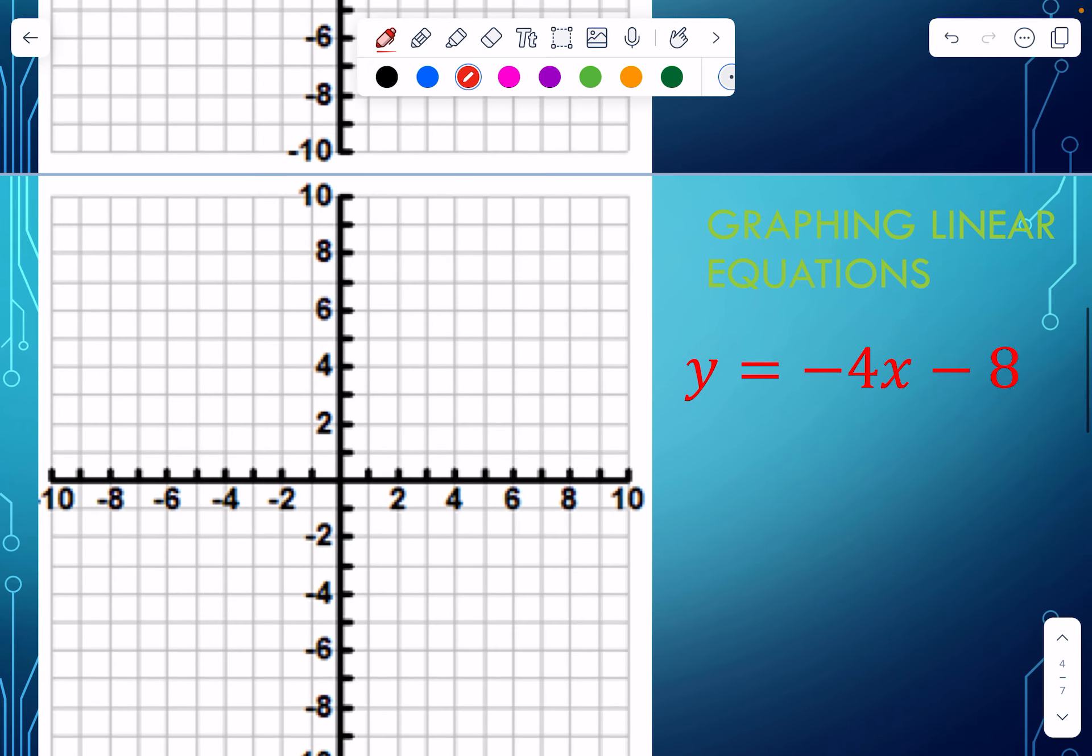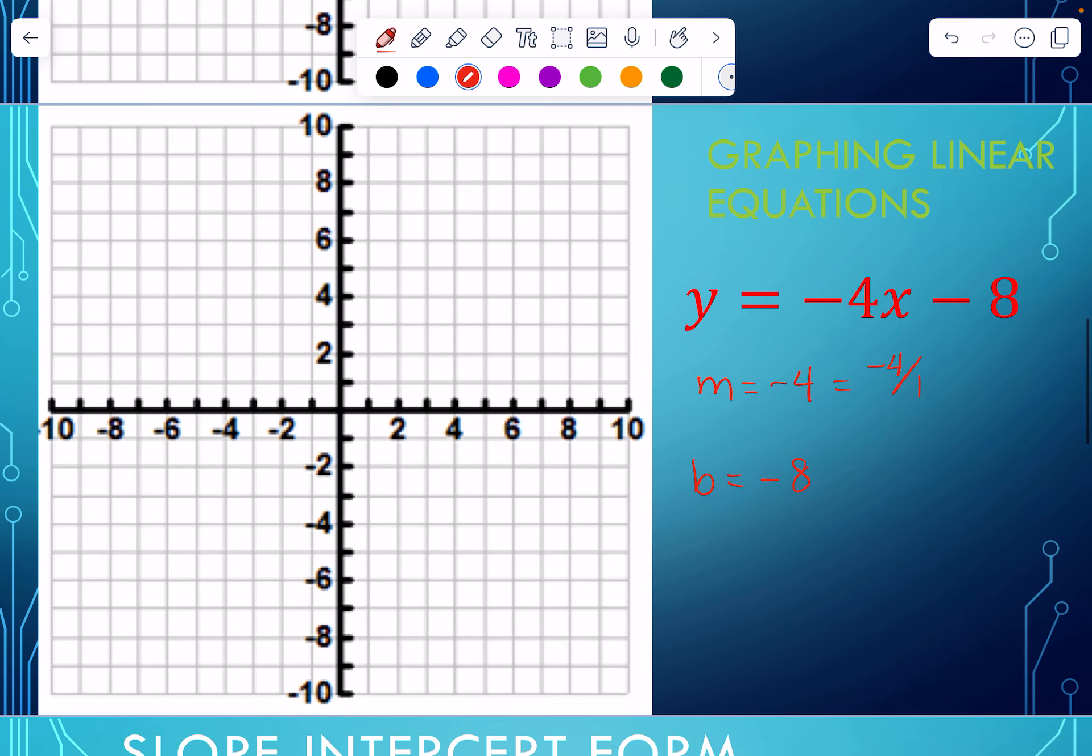Let's try another one here. So here we have a slope of negative four, and what we're thinking is negative four over one. Our y-intercept is negative eight. So that means we're going to start down here at negative eight. Since we're going negative, we have two options. A negative slope can move up and left or down and right.